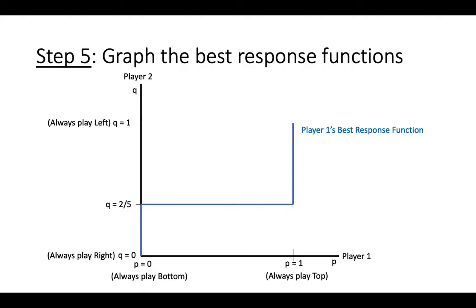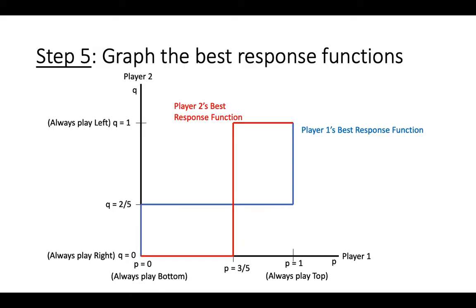For player 2, if p is less than 3 fifths, then player 2 should play the pure strategy of right. If p is greater than 3 fifths, player 2 should always play left. And if p equals 3 fifths, then player 2 is indifferent between playing right and playing left, so any value of q will be a best response to this strategy by player 1. We have now found player 2's best response function.